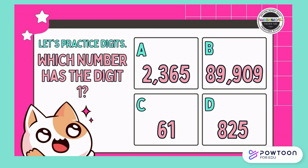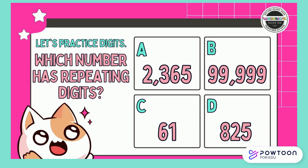Which number has the digit 1? Think, then respond. Which number has repeating digits? Think, then respond. That's right — B has repeating digits. 99,999 has repeating nines.